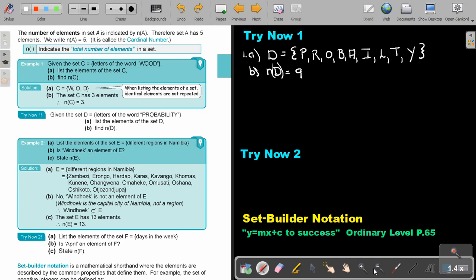Let's look at another example. Example 2. List the elements of set E, the different regions in Namibia. So, the different regions in Namibia will be Zambesi, Erongo, Hardap, Karas, Kavango, Khomas, Kunene, Ohangwena, Omaheke, Omusati, Oshana, Oshikoto, Otjozondjupa. So, is Windhoek an element? No, because Windhoek is the capital city of Namibia. It's in the region Khomas. So it's not a region, it's a city. And then state N(E), so how many elements, how many regions are there in Namibia? There will be 13.